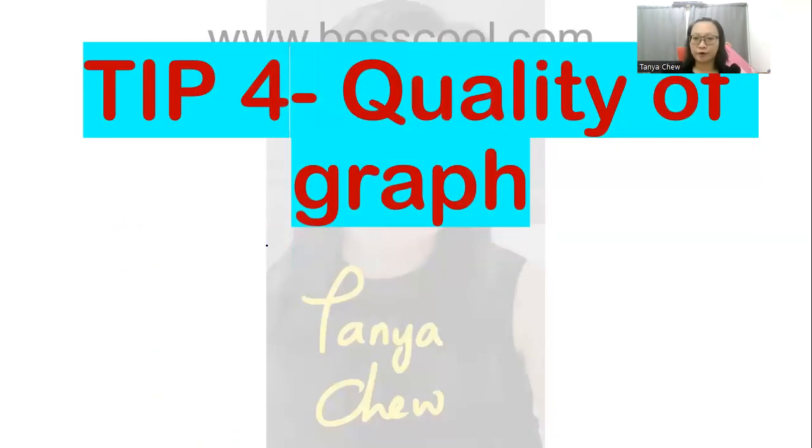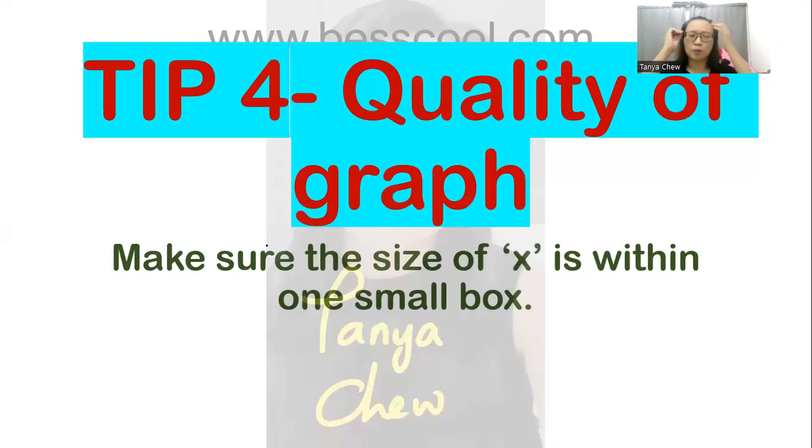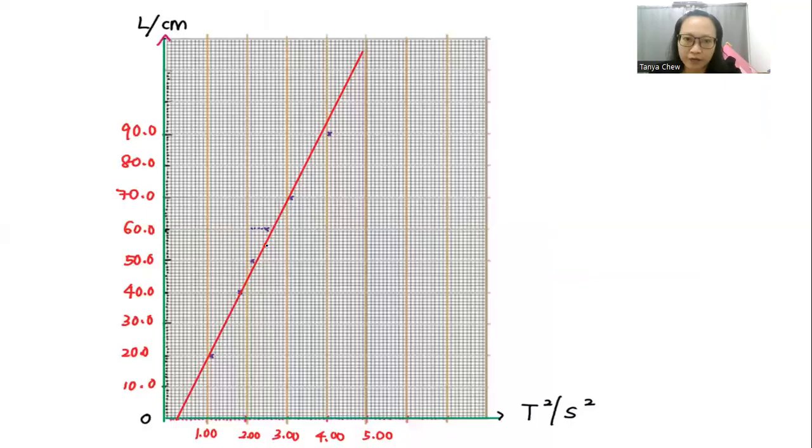Tip number four: the quality of the graph. In AS, quality is very important. So what is quality? You need to make sure the size of your x is within one small box. You see that this is my graph. We have large squares and small squares inside the large square. So make sure that the size of your x is within one small little square. It cannot be too big because that is out of the quality. And it cannot be too small as well. Just make sure the size is within that one small square and you are safe.